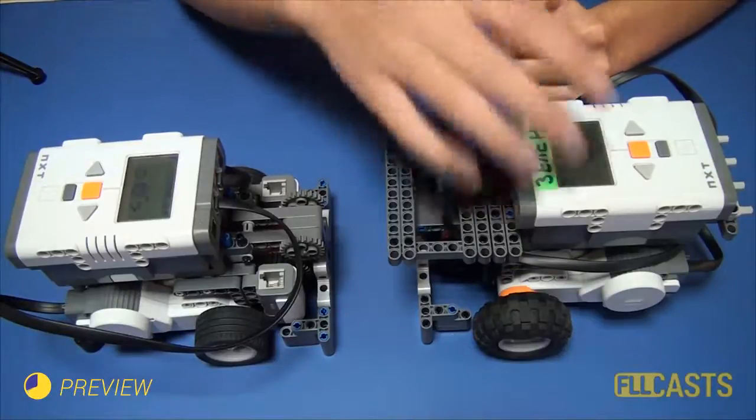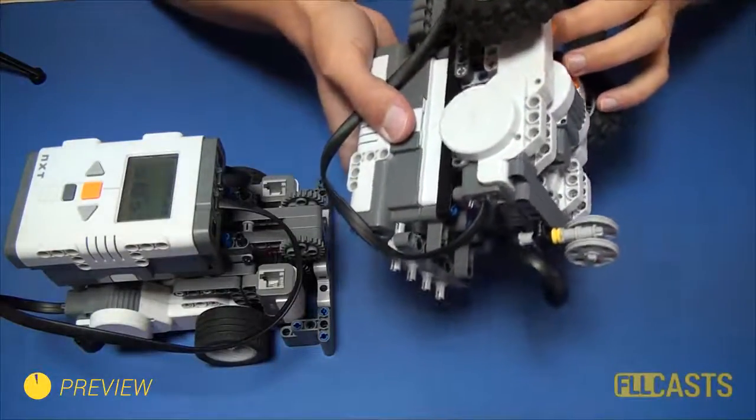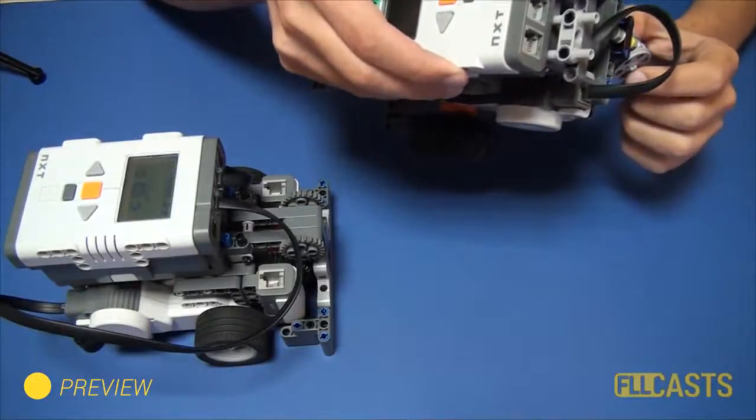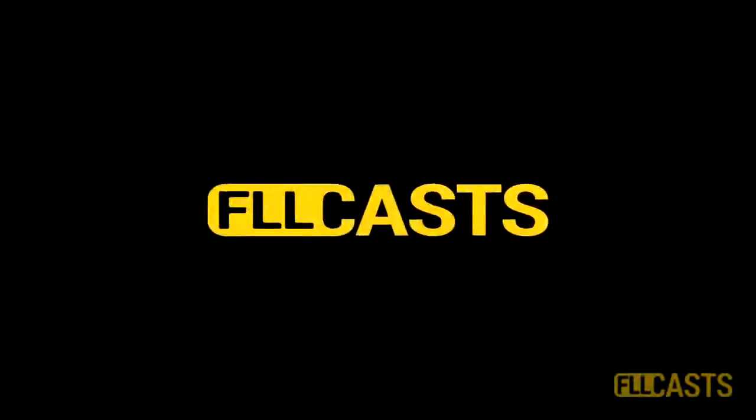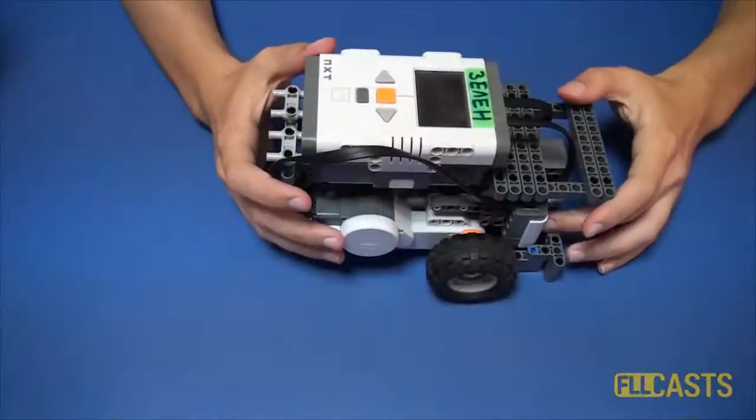Every competition robot needs a set of anchor points other than the motorized wheels in order to be stable. Today I'll show you the most common types of anchors and of course their pros and cons. One pair of caster wheels.